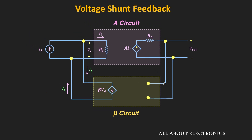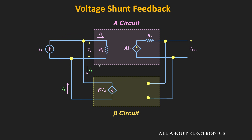The feedback network samples the output voltage Vout and provides the feedback current Iif. At the input node, this feedback current Iif is subtracted from the source signal. For simplicity, it is assumed that the input current source is an ideal current source — meaning its source impedance is equal to infinite — and the load resistor RL is not connected on the output side. Moreover, the feedback network is ideal and does not load the basic amplifier.